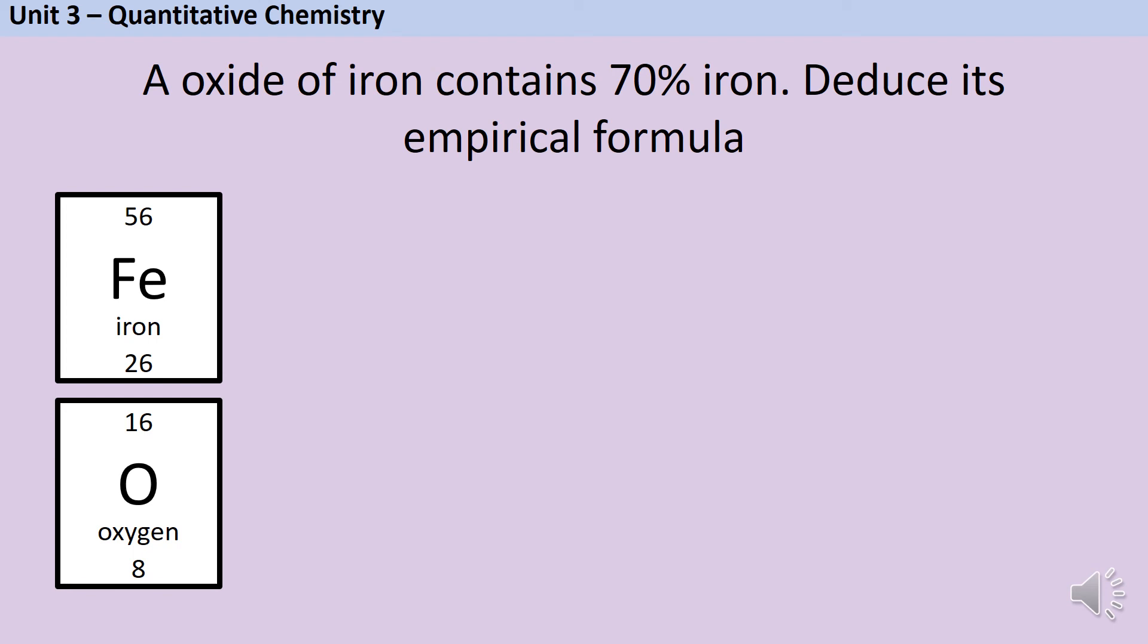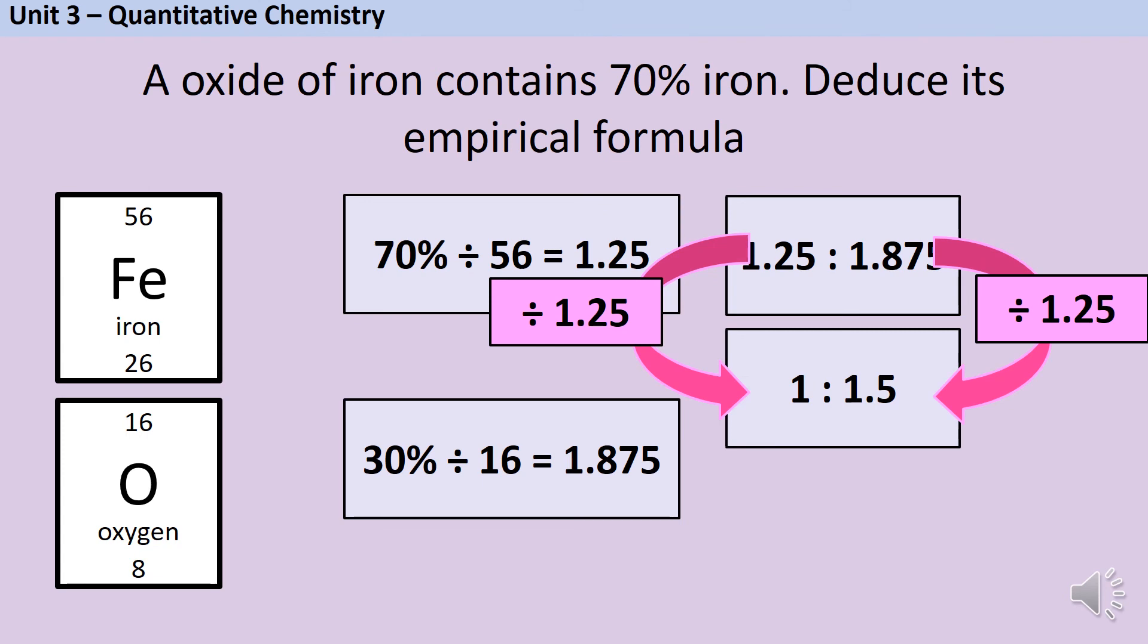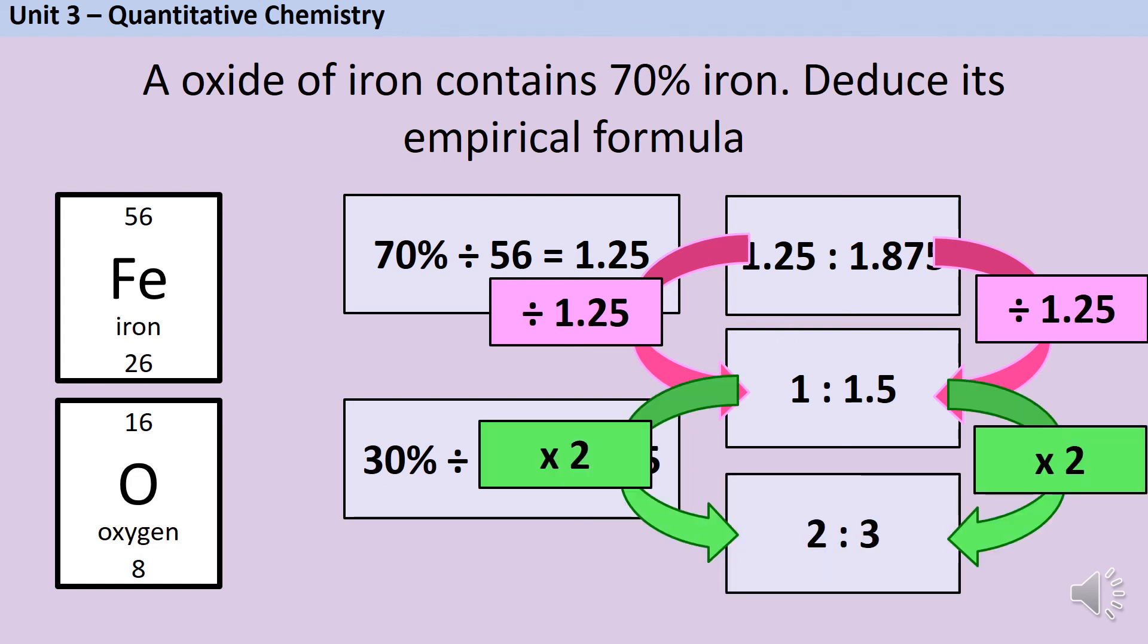So 70 divided by 57 is 1.25 moles and 30 divided by 16 is 1.875 moles. If I put those in a ratio and divide by the smallest number I have another problem because now I've got a ratio of 1 to 1.5 and that's not close enough that I can round up to 2 or down to 1. So what I need to do here is think, how can I make 1.5 an integer? I know, I'll double it. So I'm going to double both sides and I get a ratio of 2 to 3. So that means my empirical formula is Fe2O3.